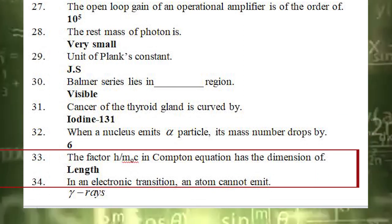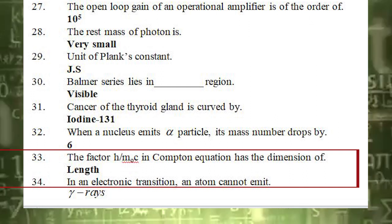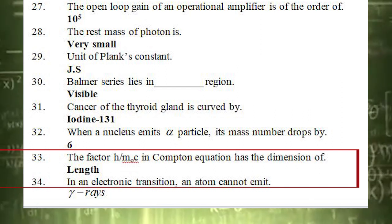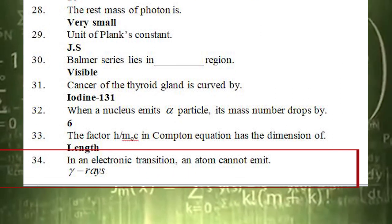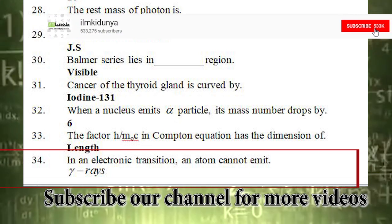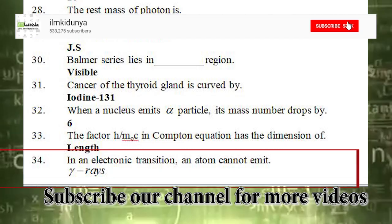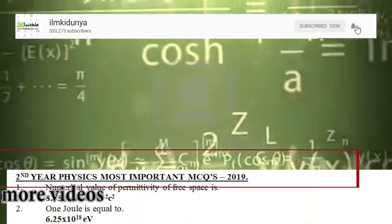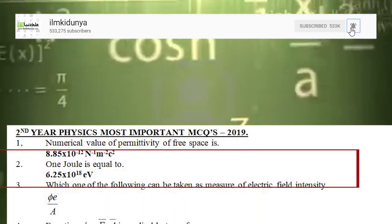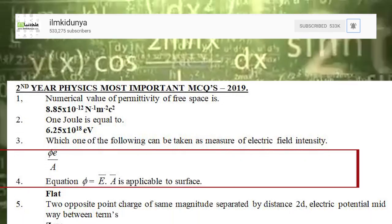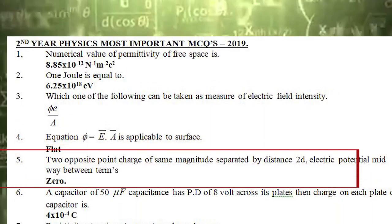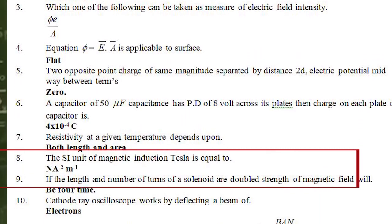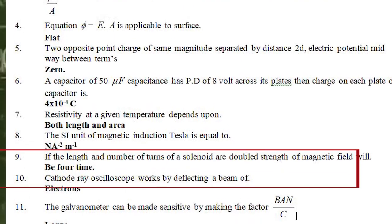The 33rd statement is: the factor h divided by m_0·c in the Compton equation has a dimension of. The correct answer is length. The 34th and last statement is: in an electronic transition, an atom cannot emit. The correct answer is gamma rays. I have provided 34 MCQs with their answers — these are the most important MCQs. If you have prepared all the MCQs, especially the last statement of each chapter, your paper will be good. Best of luck for your paper. Thank you.